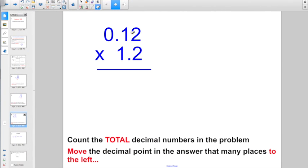Here I have 12 hundredths times 1 and 2 tenths. I'm not even going to worry about my decimal points right now. Think of it as 12 times 12. Hopefully you know 12 times 12 is going to give you a grand total of 144.